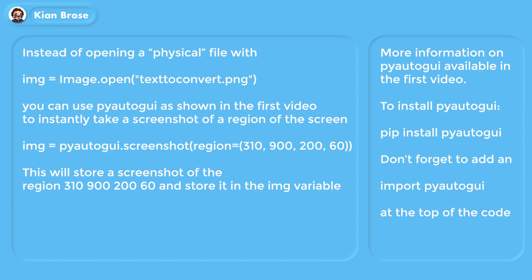If you remember what we did in the last video, you can also use PyAutoGUI to store a screenshot in the img variable instead of a file, using this line. Note that to use this you have to first install PyAutoGUI with pip install pyautogui and then put import pyautogui at the top of the code. For more on this, please watch the first video.